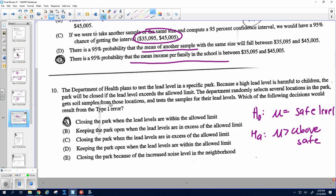So a type 1 error is rejecting the null when we should not have. So if I reject the null, I got this, that it's above. We've got a problem. It's not safe. But in reality, it was safe. So it is A, closing the park when the lead levels are within the allowed limit.